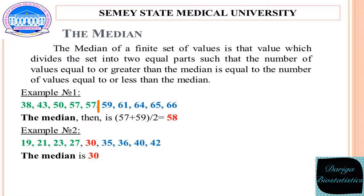The second measure is the median. The median of a finite set of values is the value which divides the set into two equal parts, such that the number of values equal to or greater than the median is equal to the number of values equal to or less than the median. In the first example the median is 58, and in the second example the median is 30. It is the middle value.